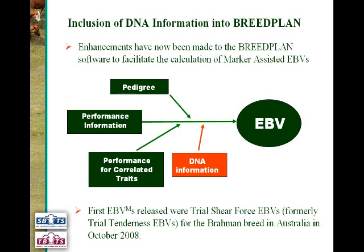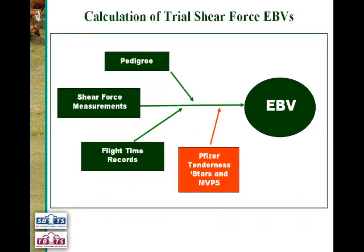The first marker-assisted EBVs were released in October 2008 for the Brahman breed — the trial shear force EBVs. These take into account several bits of information: pedigree information, direct shear force measurements, flight time records as an indirect measure of meat tenderness, plus the Pfizer tenderness STAR measurements and molecular value predictions (MVPs) — all feeding in to calculate the shear force or meat tenderness EBVs.